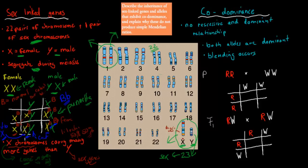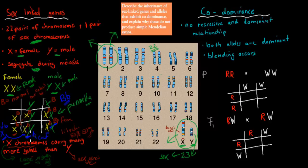So in this case, only males or the majority of males will get colour blindness. Girls have to have two X chromosomes that are both recessive for that trait to have colour blindness, whereas boys only need one recessive X because they only have one X and the Y doesn't give them any extra genes.